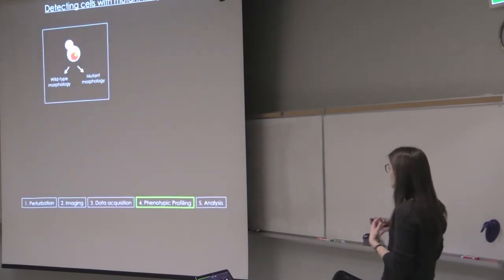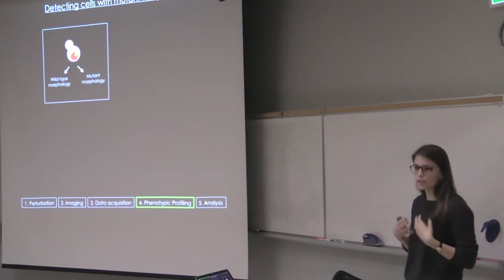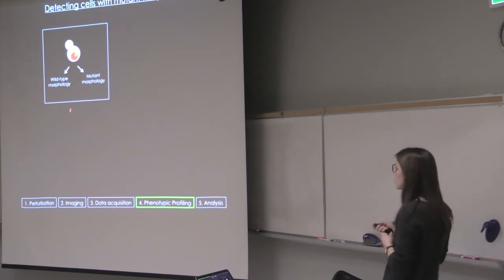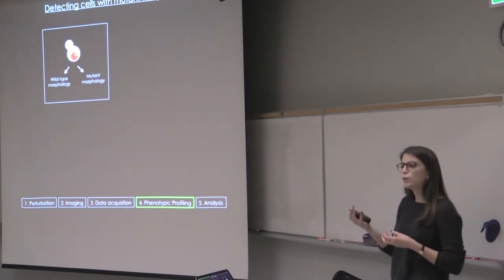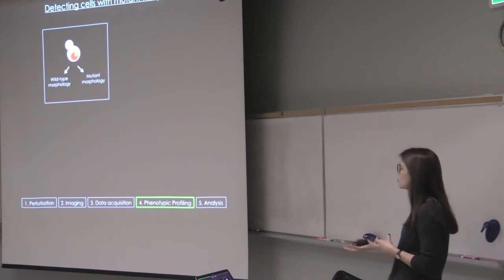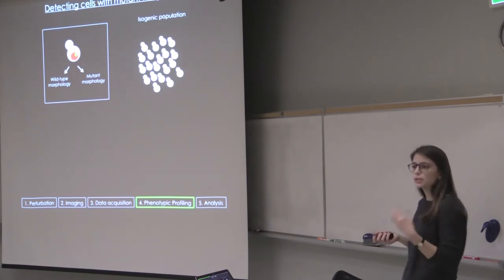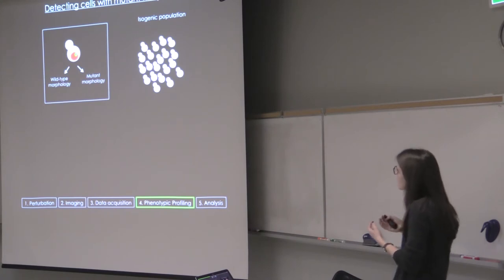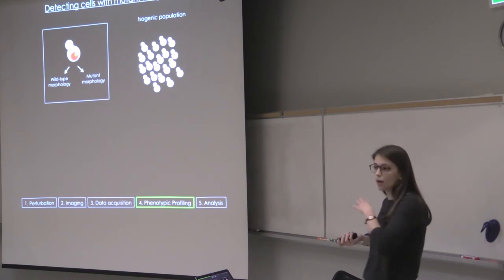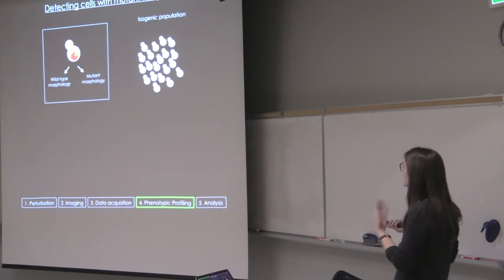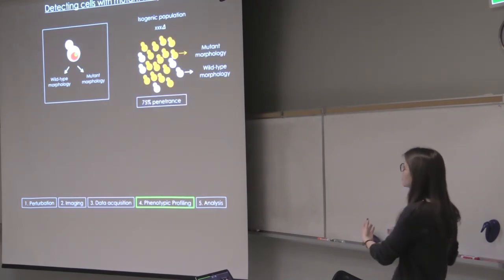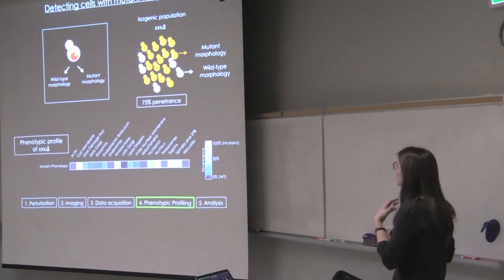So for that, we are trying to modify an unsupervised algorithm by looking only at one class. Because we only know what wild type looks like. And for each cell we want to ask the binary classification question whether something has a wild type morphology or mutant morphology. And this is important to do at a single cell level because we can't really say for sure if each cell in an isogenic population will show the same morphology.